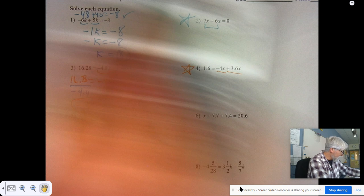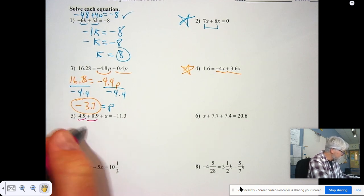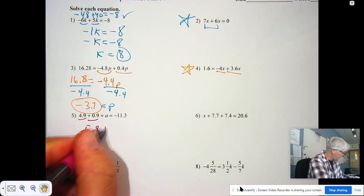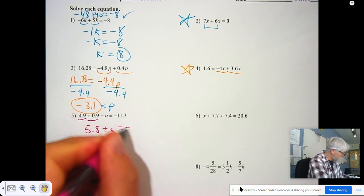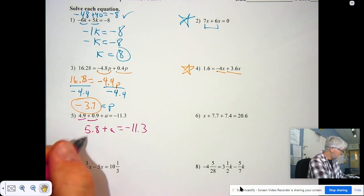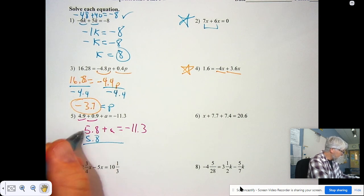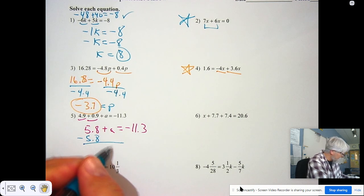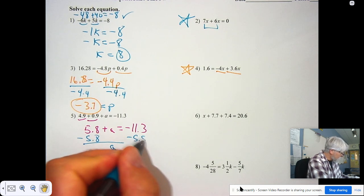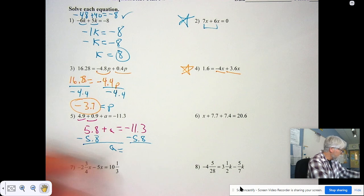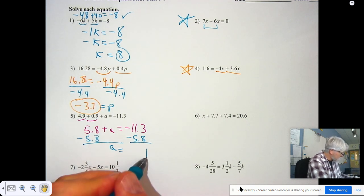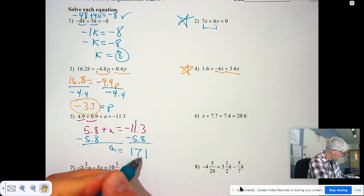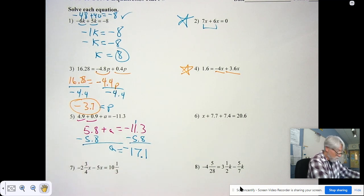All right. Welcome back. Number five. Again, combine the decimals. This time, they're constant terms. 4.9 and 0.9 is going to be 5.8 plus a equals negative 11.3. Subtract to undo the adding. 5.8 minus 5.8 is zero plus a is a. Subtract 5.8 from this side. Notice they're both negatives.